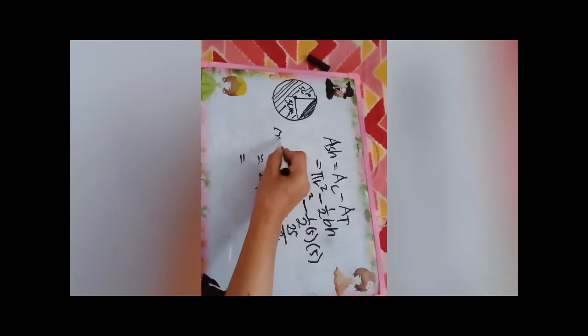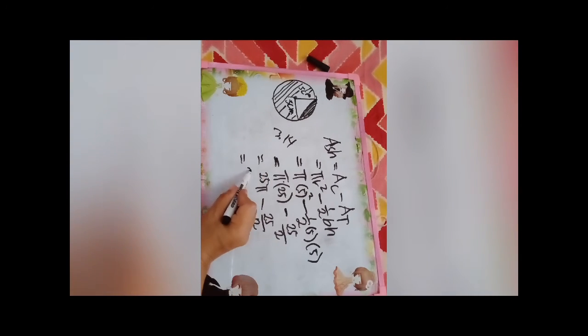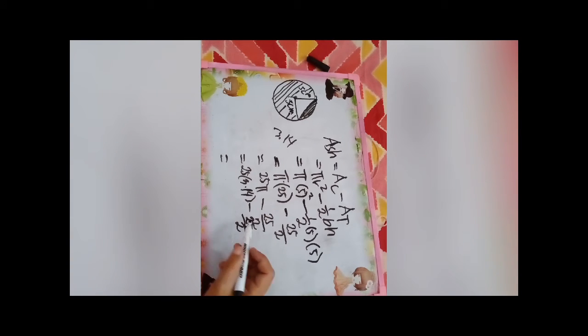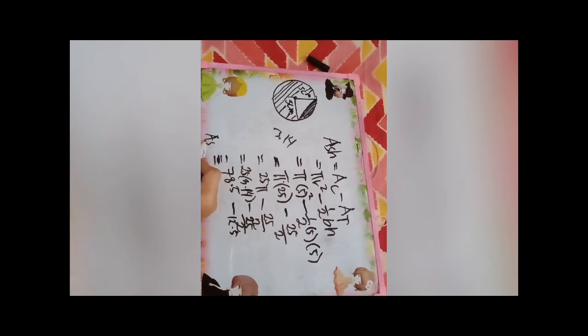We use 3.14 as π. So 25 times 3.14 equals 78.5 minus 25 divided by 2 equals 12.5. So we are going to subtract: 78.5 minus 12.5. So the area of the shaded region is 66 cm².